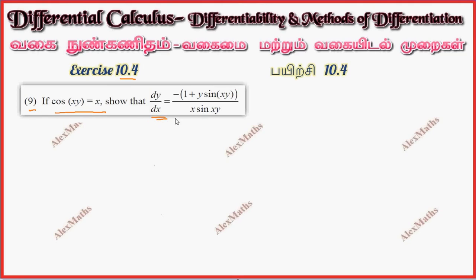We can prove that if we have a differentiation, cos becomes minus, with the inner function as it is. That is, xy is UV method: x into dy by dx plus y into 1 equal to 1.